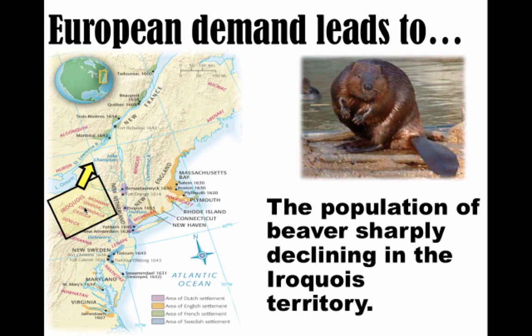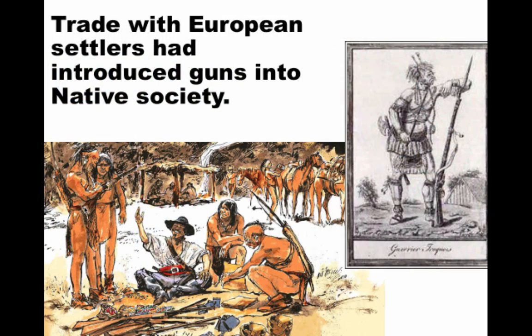One of the big reasons why the beaver population is depleted so quickly is because of the introduction of guns. European settlers brought in guns, and these guns intensified rivalries. There were already rivalries before the Europeans came, but now the stakes became even higher. With guns, they're able to hunt more efficiently, but also more destructively. The beaver population of this area is decimated — there's a huge decline of the beaver in Iroquois territory.